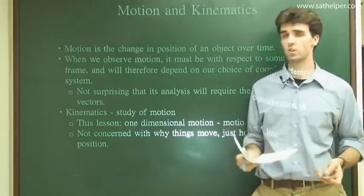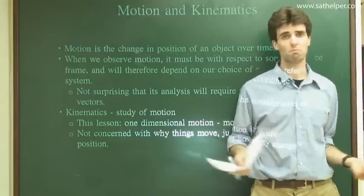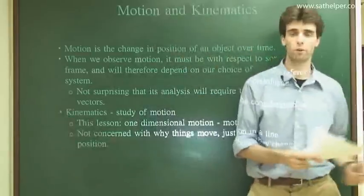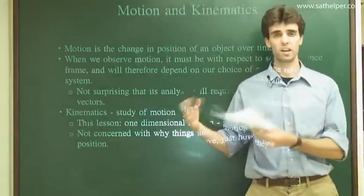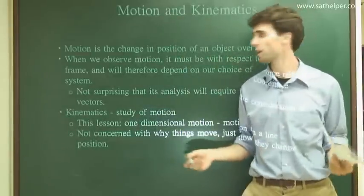Motion is the change in position of an object over time. Very simple. If I walk across the room, I'm moving back and forth. My position is changing over some unit of time interval.